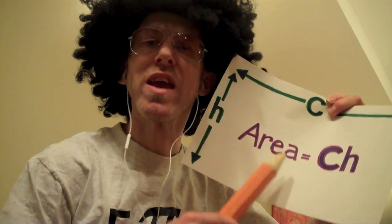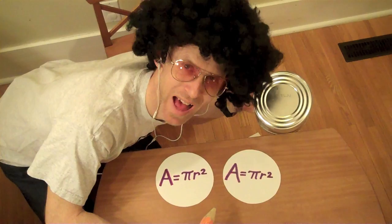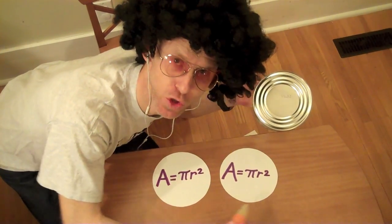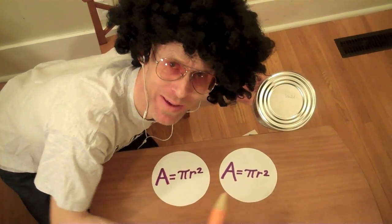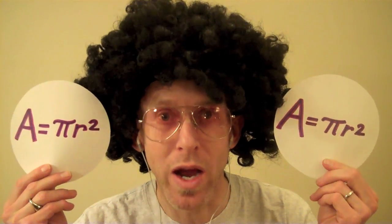You might not know it, you might not think I'm right. The rectangle's area is circumference times height. What I got here is a soup situation. I laid down the circles to see what I got. 2πr² is the area of the bottom and the top. You might not know it, you might not care. The area of two circles is 2πr².